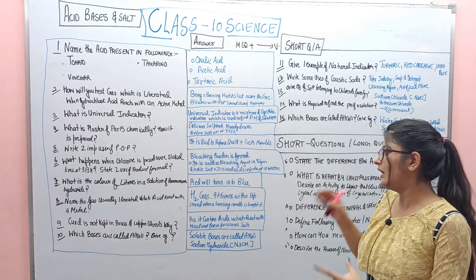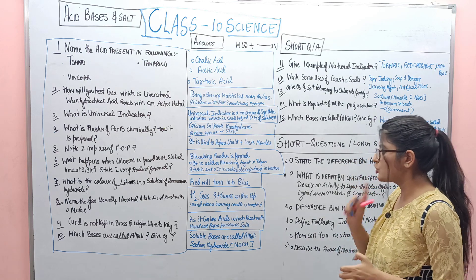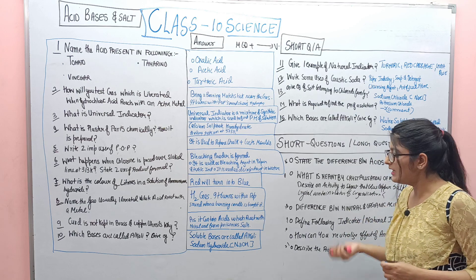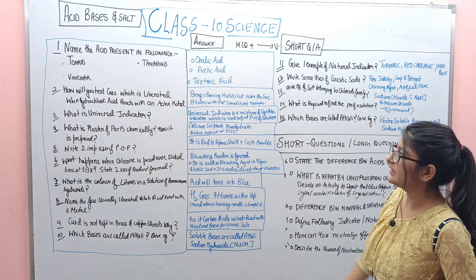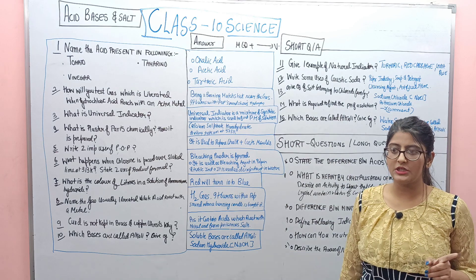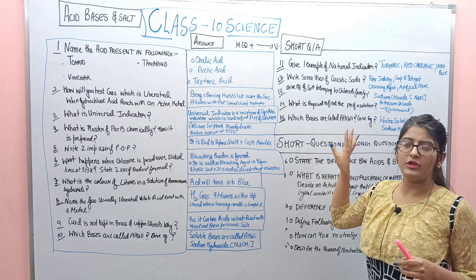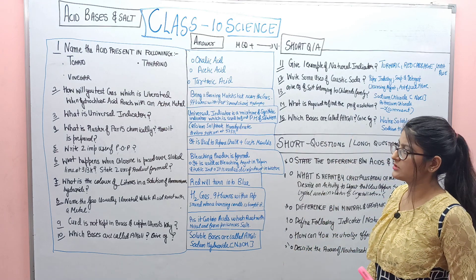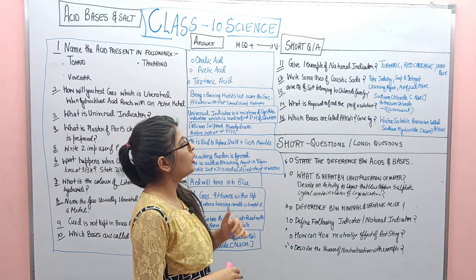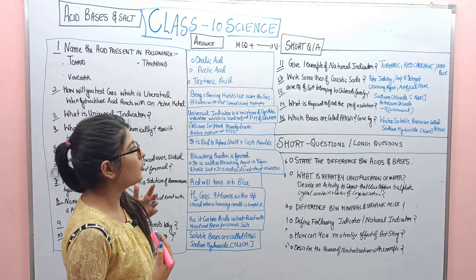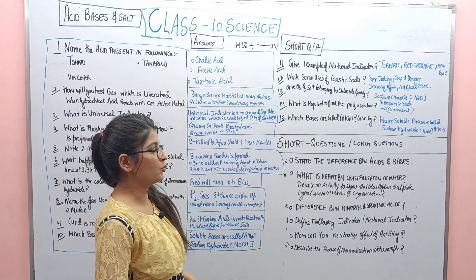Question 10: Which bases are called alkali? Give an example. Soluble bases are called alkali, and one example is sodium hydroxide. These are important questions — take a screenshot and save them in your phone gallery for revision. Question 11: Give one example of natural indicators. You can give any example — I have three: turmeric, red cabbage, and china rose.